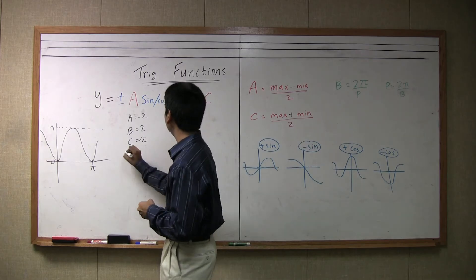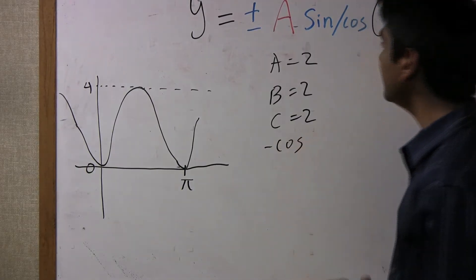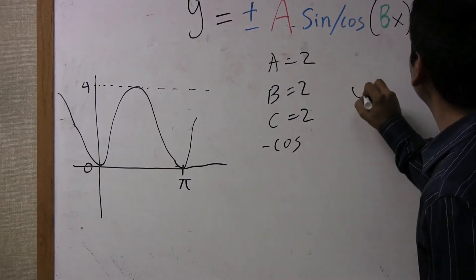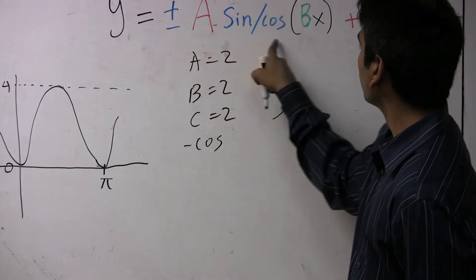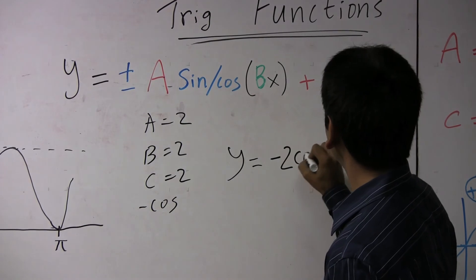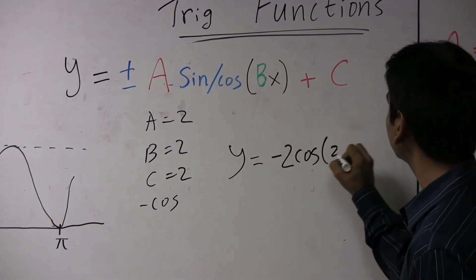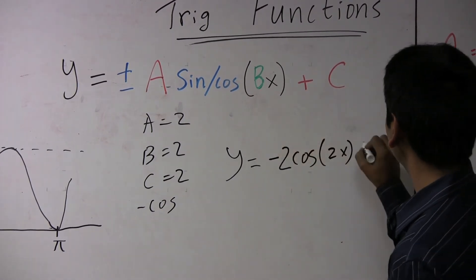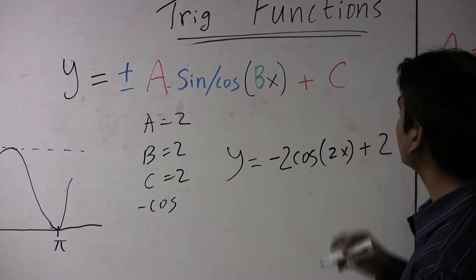So with all this information, we can find the equation of this graph, which is y equals, we're looking at a negative cosine with an a of two, so negative two cosine of two x, because b is two, plus two because that's what c is.